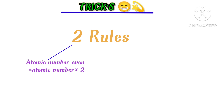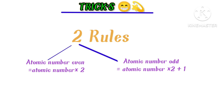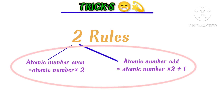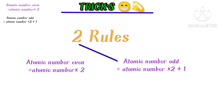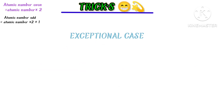Rule number one: if the atomic number of an element is even, then we apply the rule — atomic number multiplied by 2. Rule number two: if the atomic number is odd, then we apply atomic number multiplied by 2 plus 1. However, this rule cannot be applied to every element. There are some exceptional cases where we can't use these tricks, which are beryllium, nitrogen, chlorine, and argon.